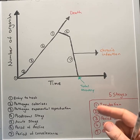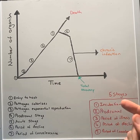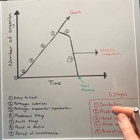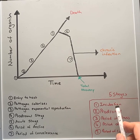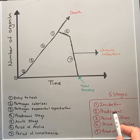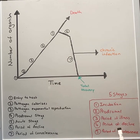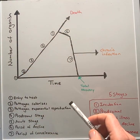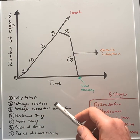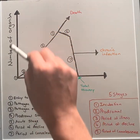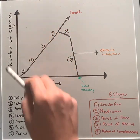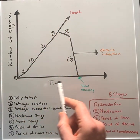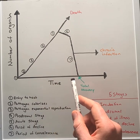There are five stages or periods of infectious disease caused by microorganisms: the incubation period, the prodromal period, the period of illness or the acute period, the period of decline, and the period of convalescence. Here I've constructed a graph to illustrate these stages. On the y-axis is the number of microorganisms within the host, and on the x-axis is time.